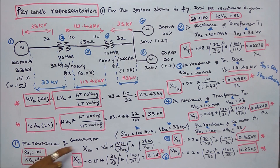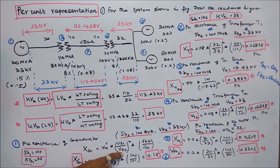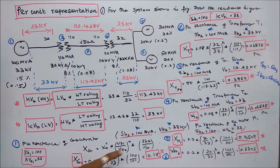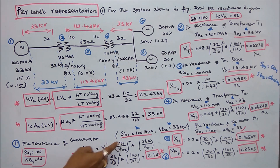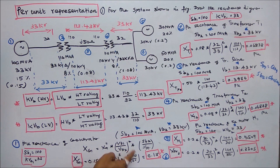First, find the per unit reactance of the generator. Xg1 equals actual reactance into (VB1/VB2) squared into (SB2/SB1). VB1 is given as 33 kV, VB2 is chosen as 33 kV, so (33/33) squared equals 1. SB2 is chosen 100, SB1 is given 100, so 100/100 equals 1. Therefore per unit reactance of generator 1 is 0.15.